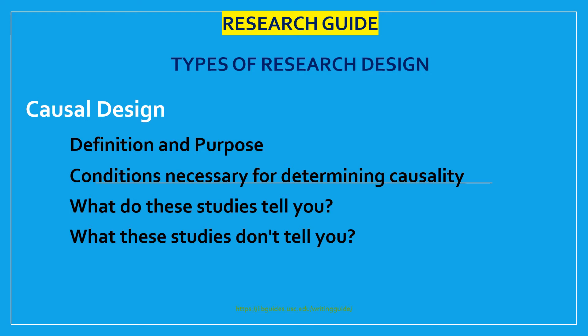The next type is causal design. Causal or causality studies may be thought of as understanding a phenomenon in terms of conditional statements in the form of 'if X, then Y.' This type of research is used to measure what impact a specific change will have on existing norms and assumptions. Most social scientists seek causal explanations that reflect tests of hypotheses. Causal effect occurs when variation in one phenomenon — an independent variable — leads to or results in variation in another phenomenon, or the dependent variable.